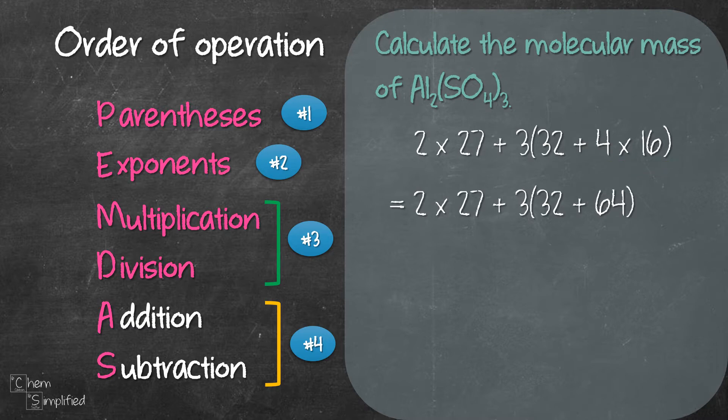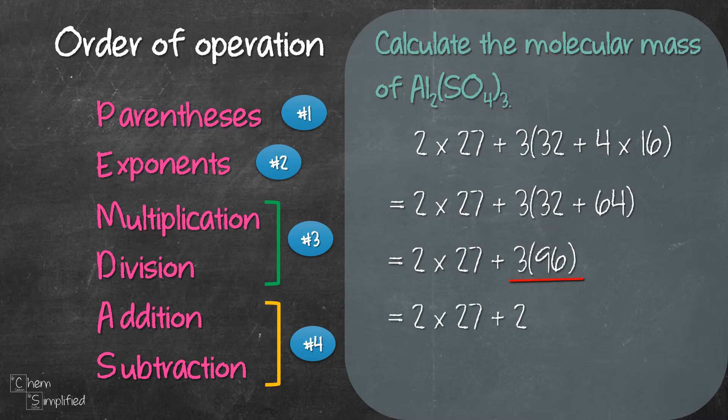Step 4 we add and subtract. Let's add 32 to 64 inside the bracket and that should give us 96 and then we need to multiply 96 with 3 so we get 288.